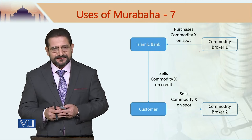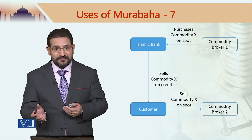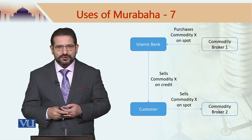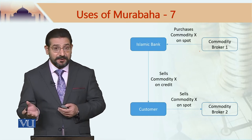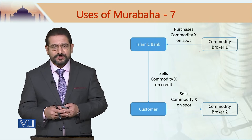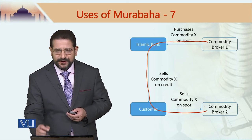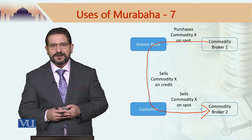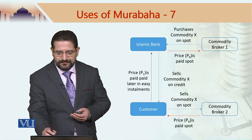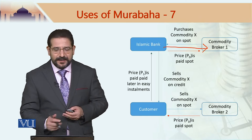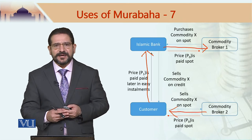Let us re-look at the structure. The customer is in need of cash and goes to an Islamic bank. The Islamic bank buys commodity X from commodity broker 1 and sells it to the customer on a murabaha basis, or on a deferred payment basis. The customer then sells it in the market through another broker — broker 2 — to generate cash. So there is a movement of the commodity in one direction, and the money moves in the other direction, eventually moving from the customer back to the Islamic bank with some profit.